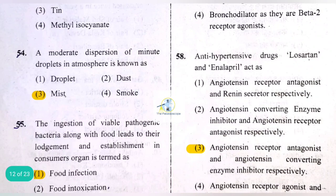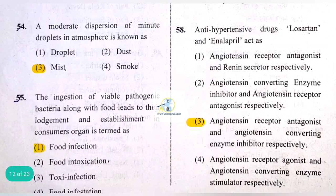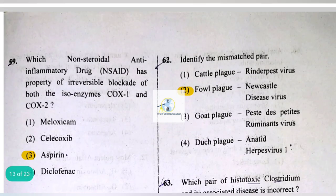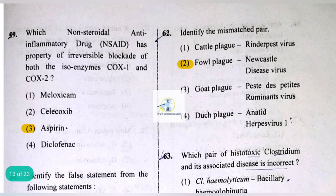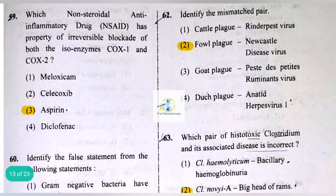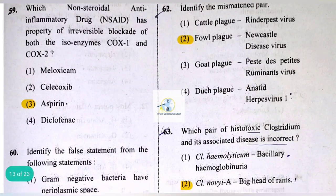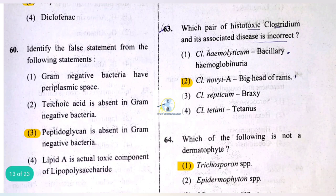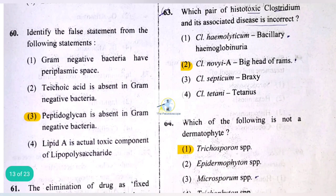Anti-hypertensive drugs losartan and enalapril act as angiotensin receptor antagonist and angiotensin converting enzyme inhibitor respectively. The non-steroidal anti-inflammatory drug (NSAID) that has the property of irreversible blockade of both isoenzymes COX-1 and COX-2 is aspirin.